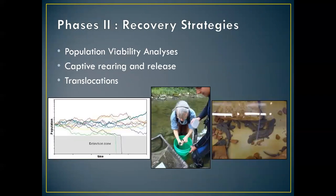At this point we felt like we had a really good understanding of the natural history of Hellbenders in Indiana, so we started to focus on phase two: recovery strategies. We conducted a very large population viability analysis, and we started looking at various management strategies — captive rearing and release, as well as translocations — moving those isolated individuals from location to location to see if we can get them to stay, both as adults and as juveniles.